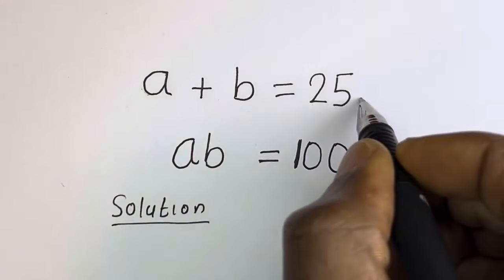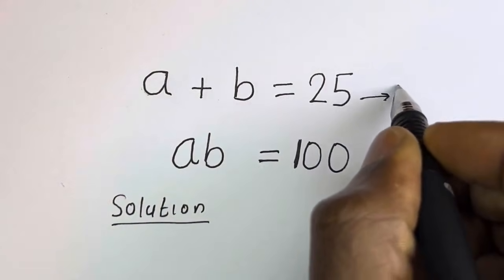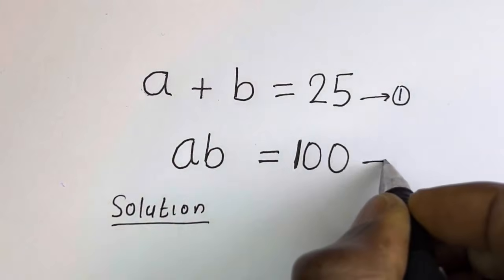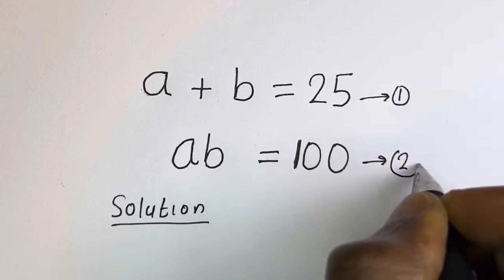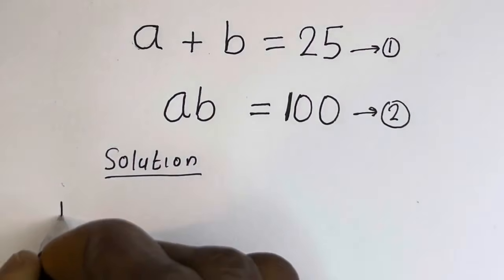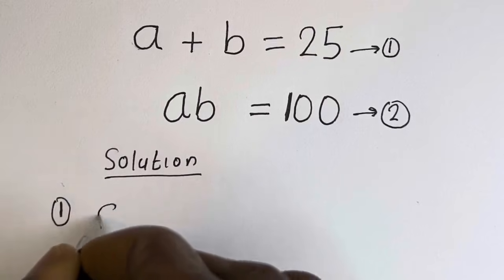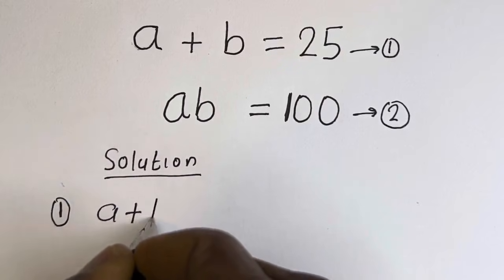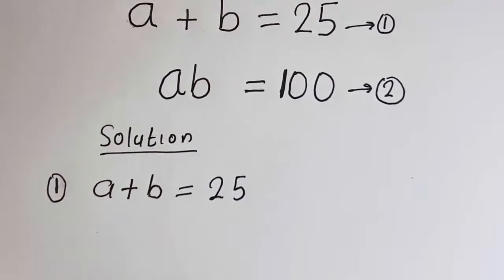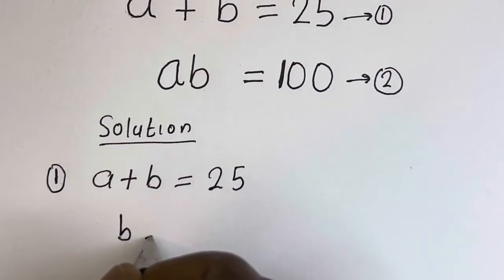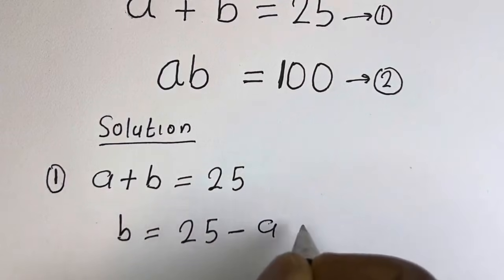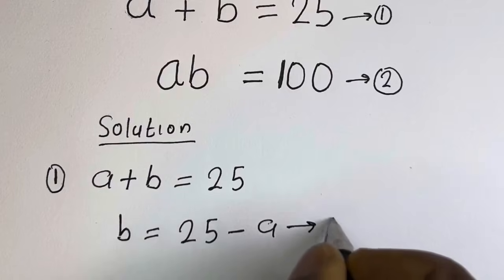A plus B is equal to 25 — let's call this equation 1. Then AB is equal to 100 — let's call this equation 2. From equation 1, A plus B equals 25, so B is equal to 25 minus A — let's call this equation 3.